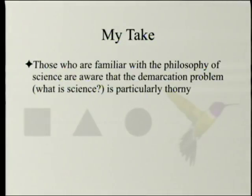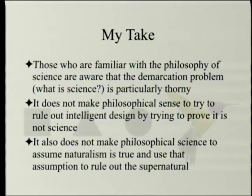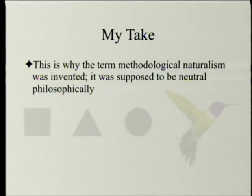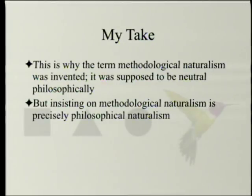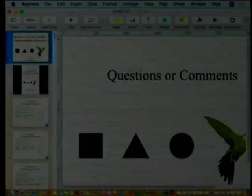Now, my take on all this: those familiar with the philosophy of science know that the demarcation problem — 'what is science?' — is particularly thorny, and many say it can't be solved. It does not make philosophical sense to try to rule out intelligent design by trying to prove it is not science, when you can't even define science well. It also does not make philosophical sense to assume naturalism is true and use that assumption to rule out the supernatural. That is why the term 'methodological naturalism' was invented — it was supposed to be neutral philosophically, but insisting on methodological naturalism is precisely philosophical naturalism. Ruling out the god-of-the-gaps argument is only fair if one knows there is no God, or that God will not interfere — which makes ruling out those arguments circular.